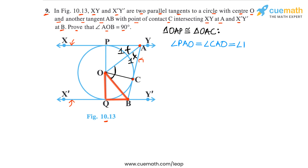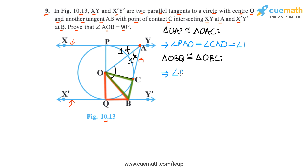Now let's compare triangle OBQ with triangle OBC. Again, these two triangles are congruent — you can pause to verify. From triangle OBQ ≅ triangle OBC, it follows that angle QBO equals angle CBO. Let's call both of these angles angle 2.